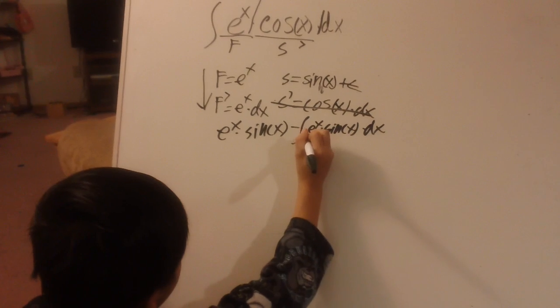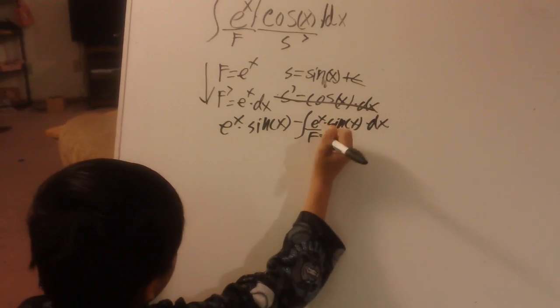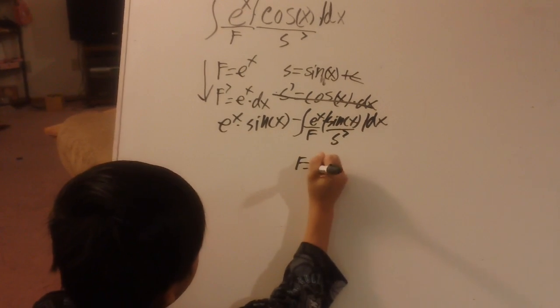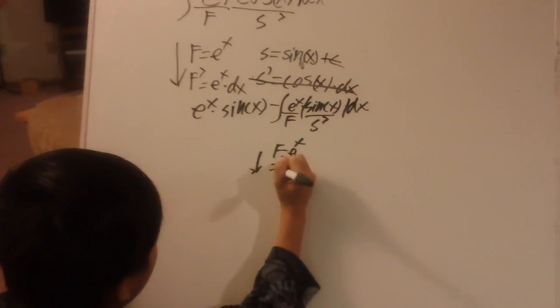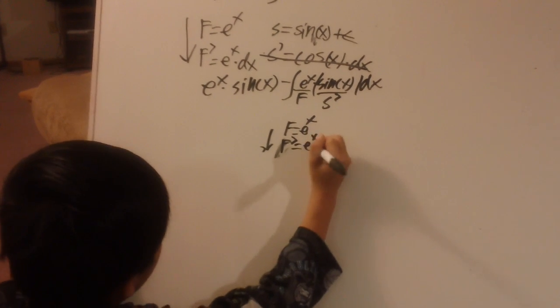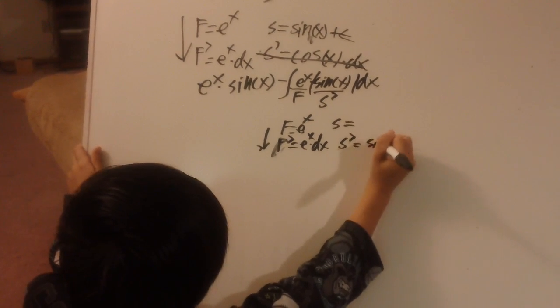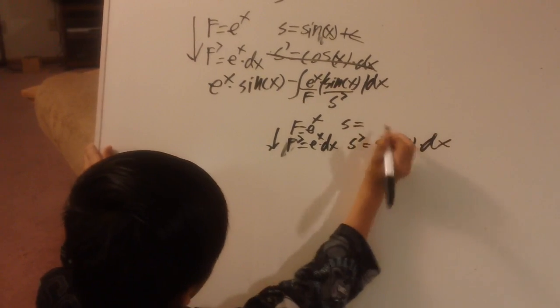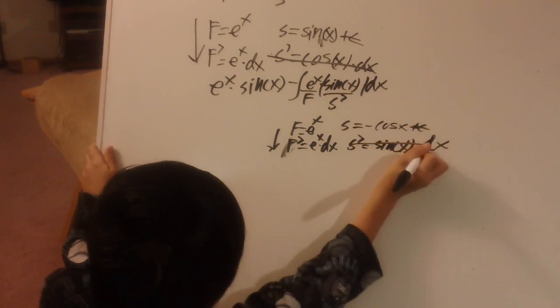When I said repeated, you have to do the same thing, first and second. So first and second down. f equal e^x, f down equal e^x dot dx. And then s down equal sin(x). Sine dot dx. And then sine go up is -cos(x). And again, you don't have to put a plus c and cross this if you want.